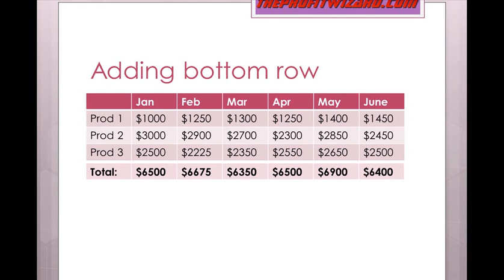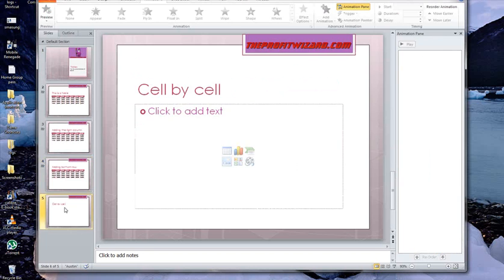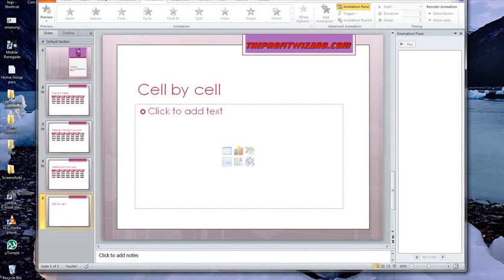Now obviously if you wanted to, you could add cell by cell — really build it up. So you might do row by row, column by column, and just match them up. But hopefully that's helped you. As I said, quick video for anybody that needs it, and I hope that's been of help. Cheers.